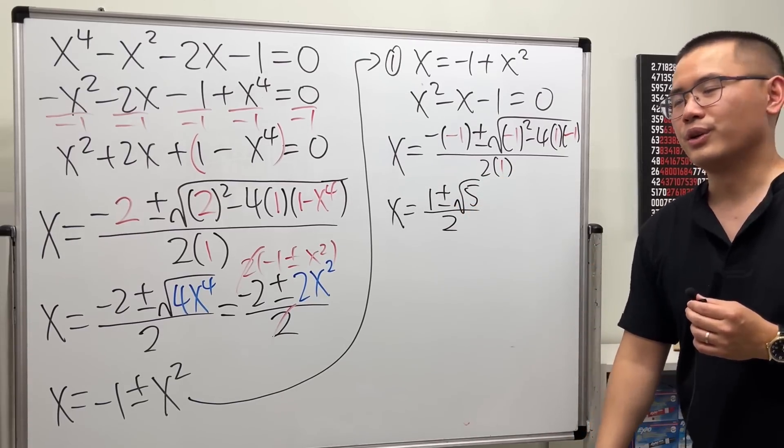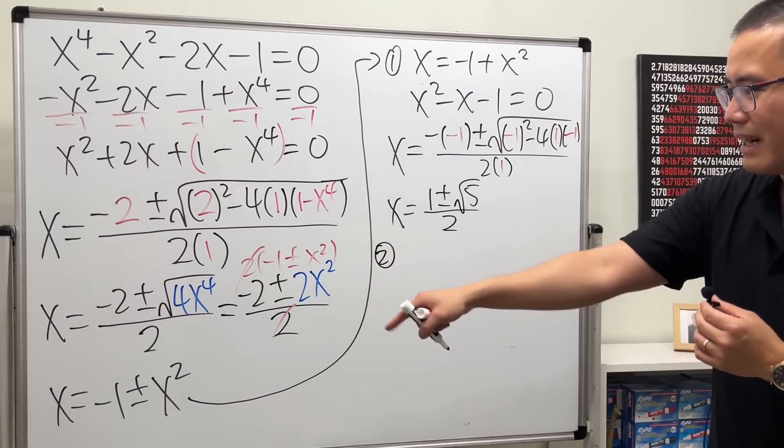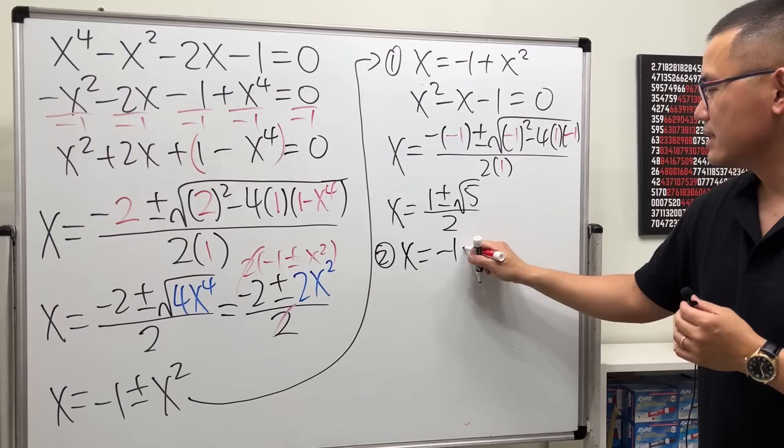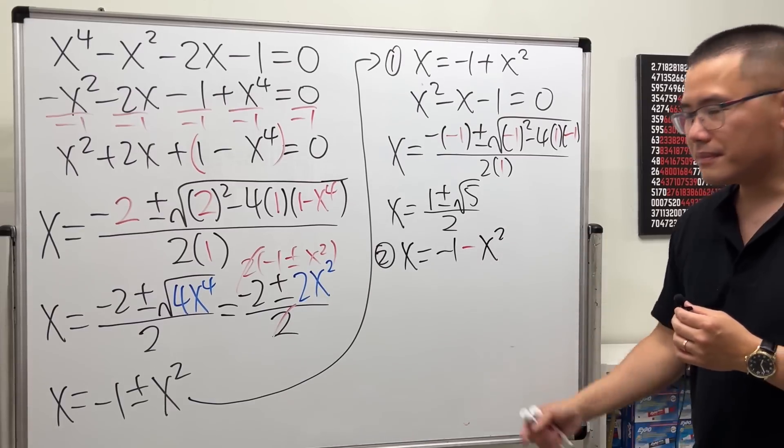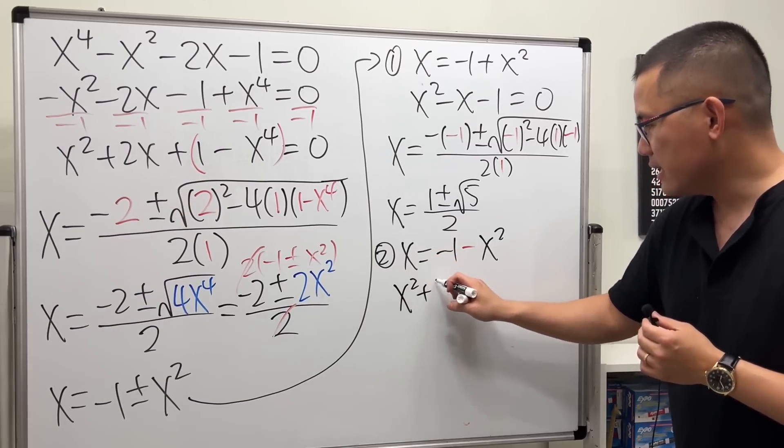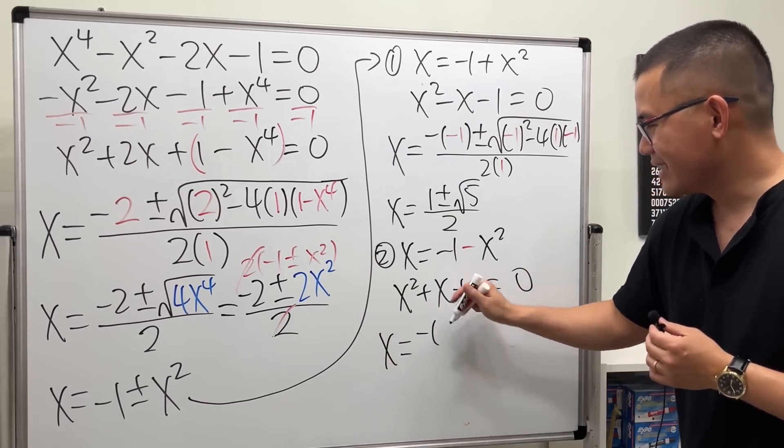And yes, we get our golden ratio from here. Secondly, let's do it with the minus, so x equals negative 1 minus x square. Put this to the other side: x squared plus x plus 1 equal to 0.